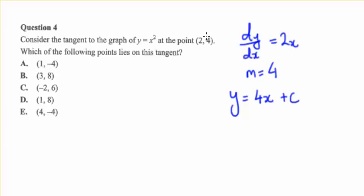Now solving for c we sub in this point so we get 4 equals 8 plus c which implies c equals negative 4. So our line equation is y equals 4x minus 4. That's our tangent.